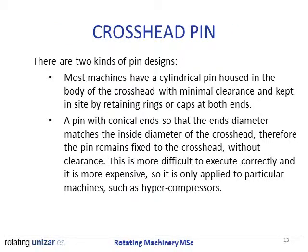For the crosshead pin, there are two different designs depending on the shape of the pin. Most machines have a cylindrical pin, which must be retained in position by retaining rings or caps at both ends due to minimal clearance. Another solution is a pin with conical ends, where the shape matches the inside diameter of the crosshead and the pin remains in place without clearance. However, this is more difficult to manufacture and more expensive, so it is only applied to high-demanding machines such as hyper compressors.